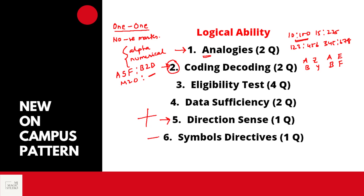Then expect one question from symbol directive. Symbol directive means some relationship would be given to you between two alphabets or numbers with the help of symbols. For example, if A @ B means A is greater than B, A + B means A is less than B, or A * B means A is less than or equal to B. Based on that, some statements and conclusions would be given and we need to answer accordingly.